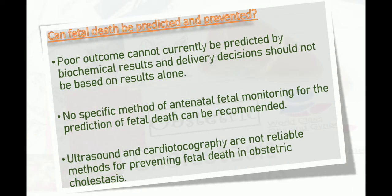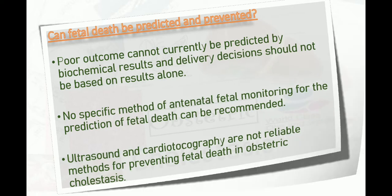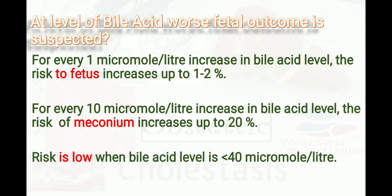Fetal death cannot currently be predicted by biochemical results alone, and delivery decisions should not be based on results alone. No specific method of antenatal fetal monitoring for prediction of fetal death can be recommended; ultrasound and cardiotocography are not reliable methods. For bile acid levels, for every 1 micromole per litre increase, fetal risk increases by 1–2%; for every 10 micromole per litre increase, the risk of meconium increases by 20%. Risk is low when bile acid levels are below 40 micromoles per litre.